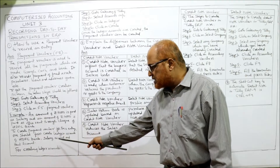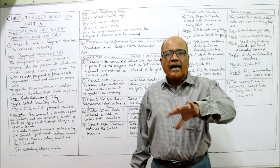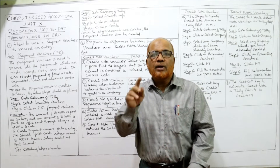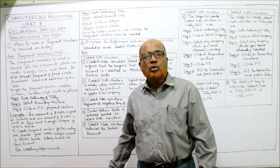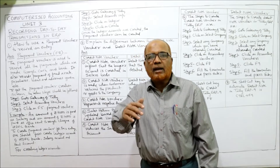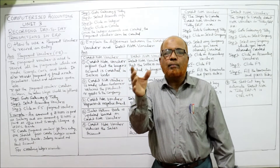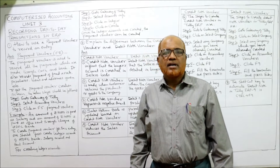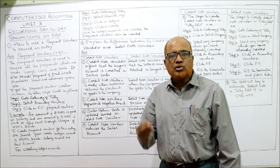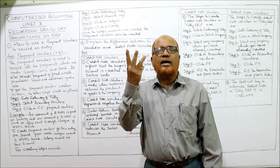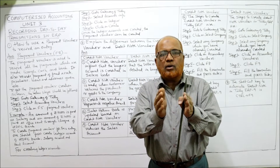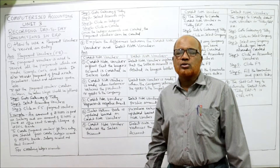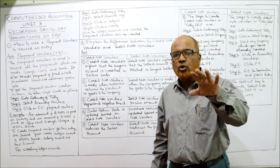We cannot directly enter the transaction of paying salary or rent before creating the required accounts. In our example, three accounts are needed: a salary account, a rent account, and an HDFC bank account. First we have to open these accounts and keep them ready, then we can enter the payment voucher.